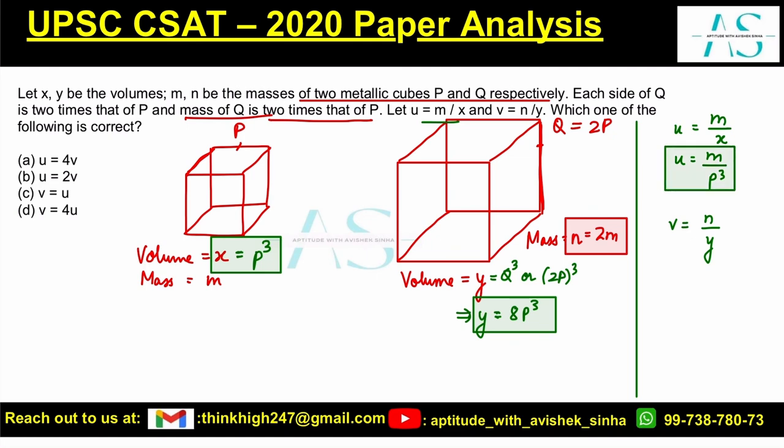Can I write v is equal to n? Instead of n, can I write here 2m, and instead of y, can I write this as 8P cube? Let's simplify this. 4 is cross multiplied with v, this becomes 4 into v. This is m by P cube.